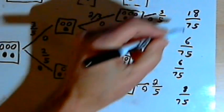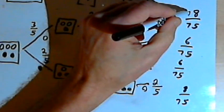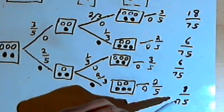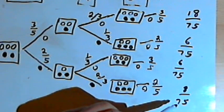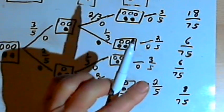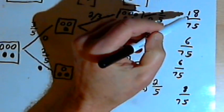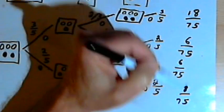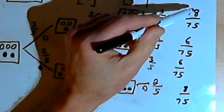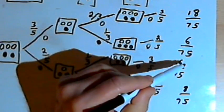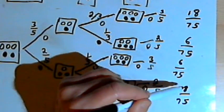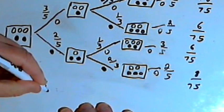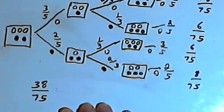Now we add up all those probabilities: 18 over 75, plus 6 over 75, plus 6 over 75, plus 8 over 75. That gives us the probability of having chosen one of these paths — in other words, the probability of getting a white ball. Since all the denominators are the same, we just add the numerators: 18 plus 6 is 24, plus 6 more is 30, plus 8 is 38. So the probability of choosing a white ball is 38 over 75.